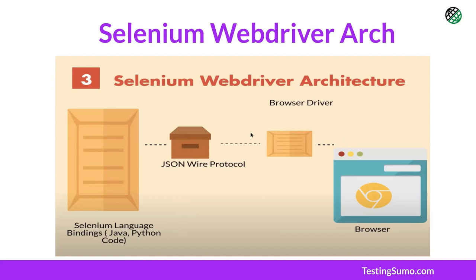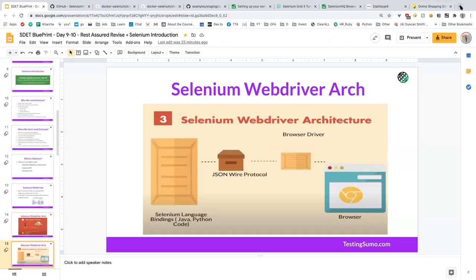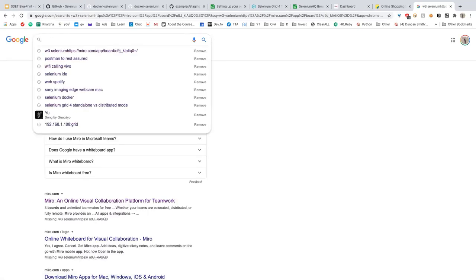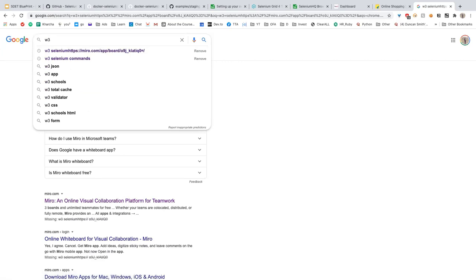The browser driver understands the request and sends an instruction to the browser. In Selenium 4, with the W3C protocol, nothing really changes in practice. The JSON Wire Protocol is now an industry standard recognized by W3C. It's essentially the same communication flow, now formally standardized.